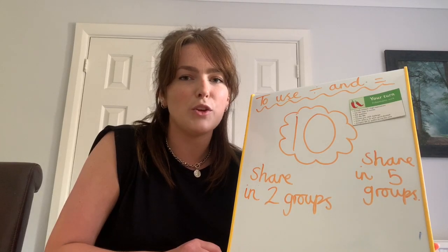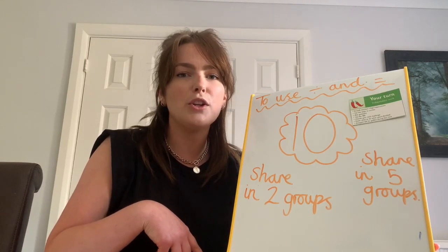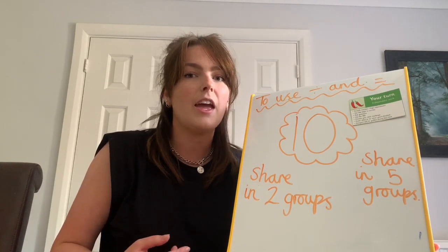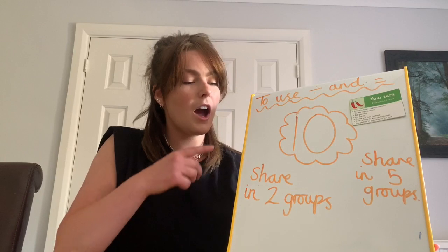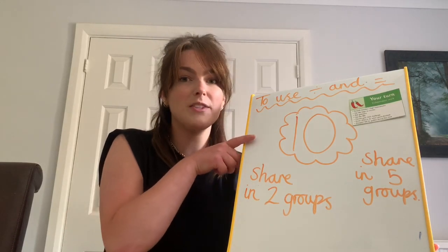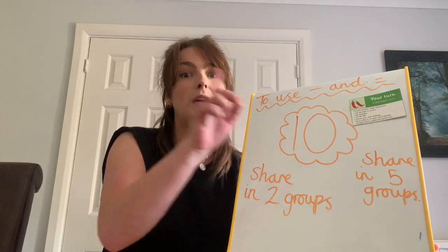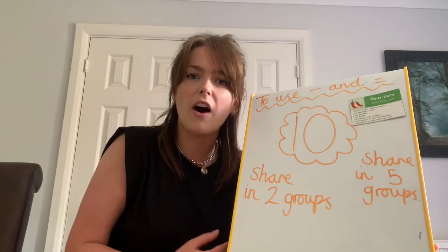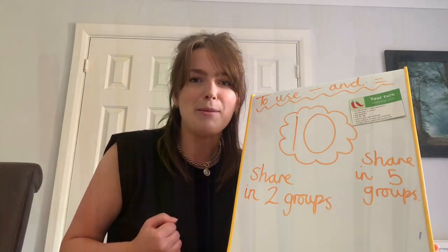Okay, year two, now it is your turn. It's a chance to get your brain warmed up before we carry on. I want you to go on a scavenger hunt around your house. I want you to try and find ten objects — it could be absolutely anything, it could be pasta, pens, or even some socks from your bedroom. I want you to see if you can share those ten objects into two equal groups. Remember, equal groups means they have to be the same in each. And then see if you can share those ten objects into five equal groups. Do you think you'll be able to do both? I'll see you in a minute — let me know how you get on.